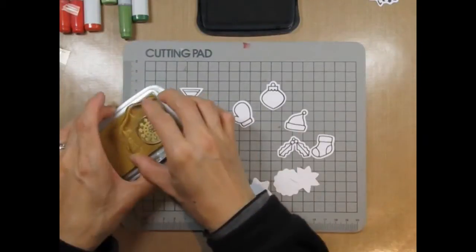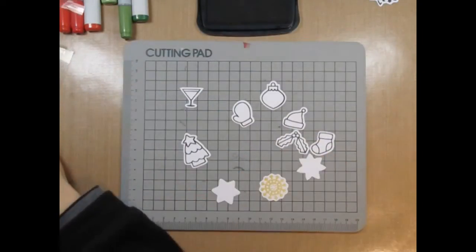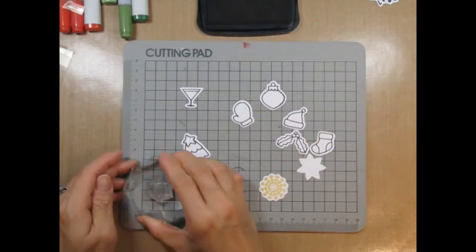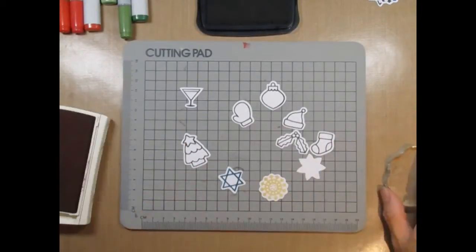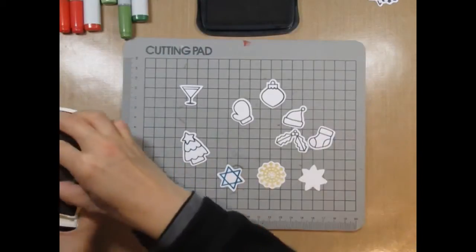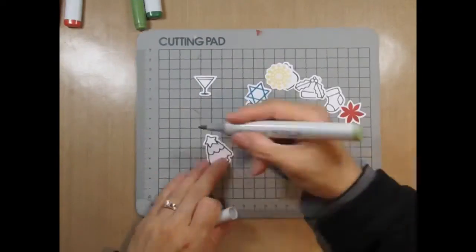I'm stamping the Snowflake in gold, the Star of David in blue, and the Poinsettia in red. Now all the images will be coloured with Copic markers.